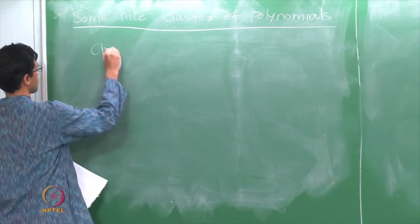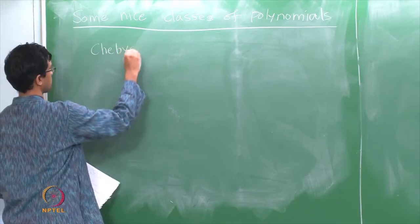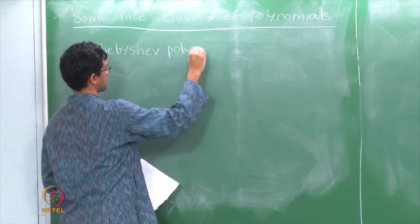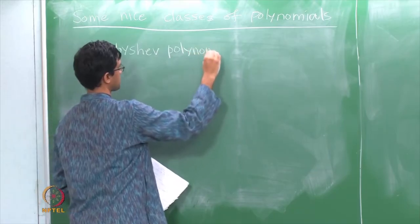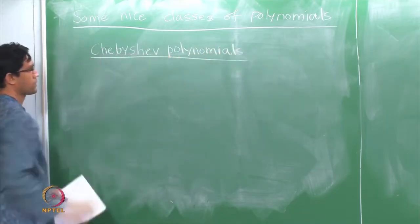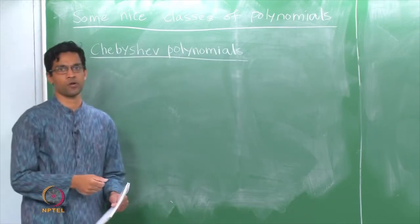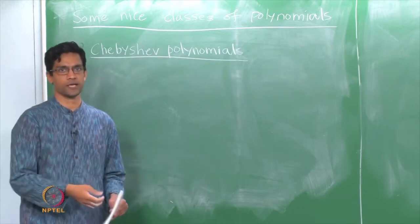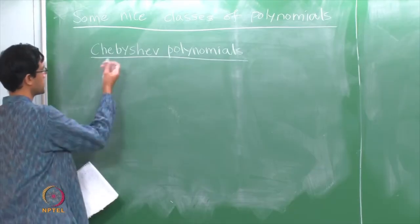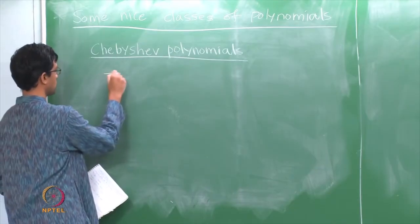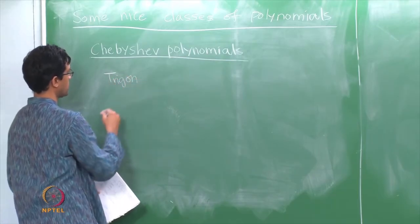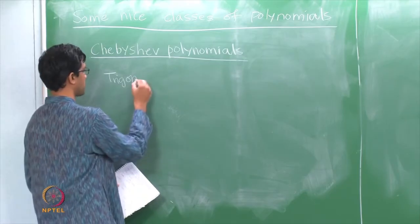The first thing I will talk about are what are called Chebyshev polynomials — sometimes called the Chebyshev polynomials of the first kind; there is also a second kind. Now where do these arise from? To better appreciate this, what one needs to recall is a little bit of identities from trigonometry.